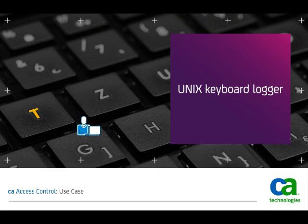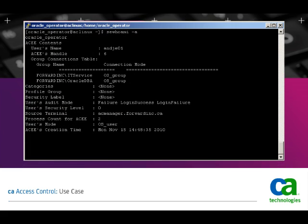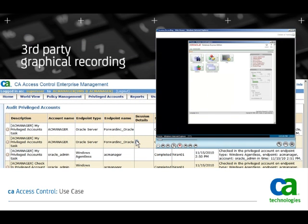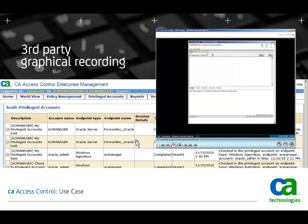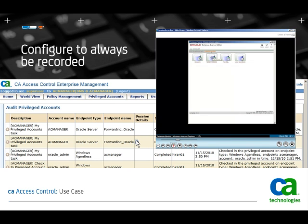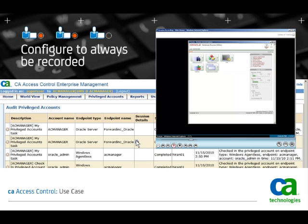Using a UNIX keyboard logger, CA Access Control provides auditors and administrators with securely recorded keystrokes from privileged user sessions. For a VCR-like session recording, screenshots from a session can be captured through integration with third-party software. You also have the option to configure privileged accounts to always be recorded.